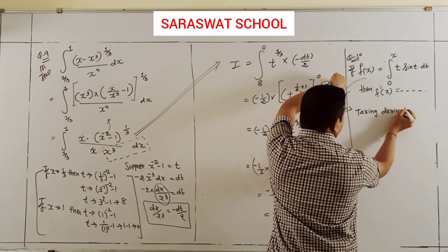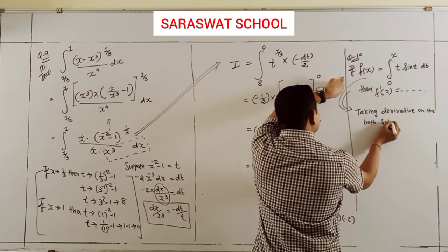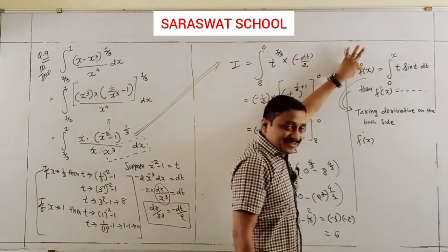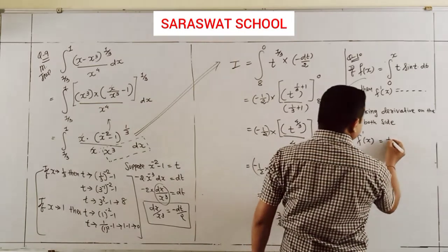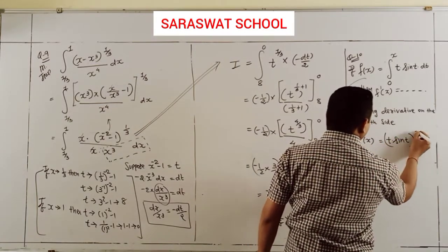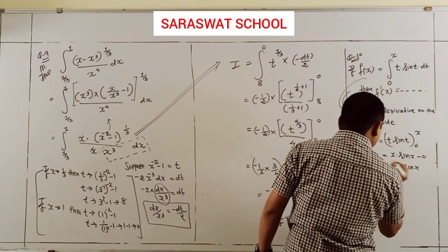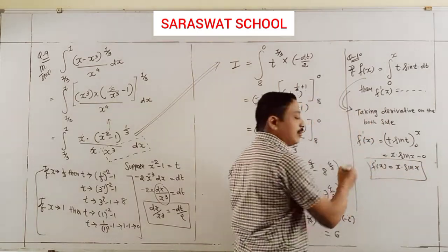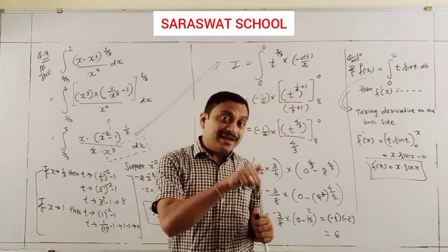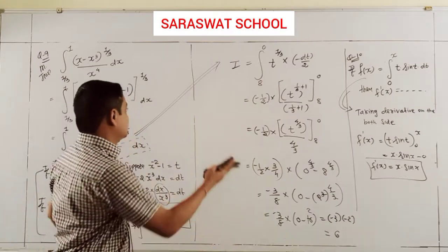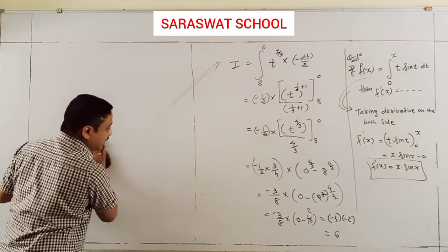Shortcut: take the derivative on both sides. F'(x) on the left. On the right, derivative of integral cancels, and substitute the upper limit x in place of t: x·sinx minus 0. Your numerical is done. If it's an MCQ, apply this shortcut and get the answer x·sinx.